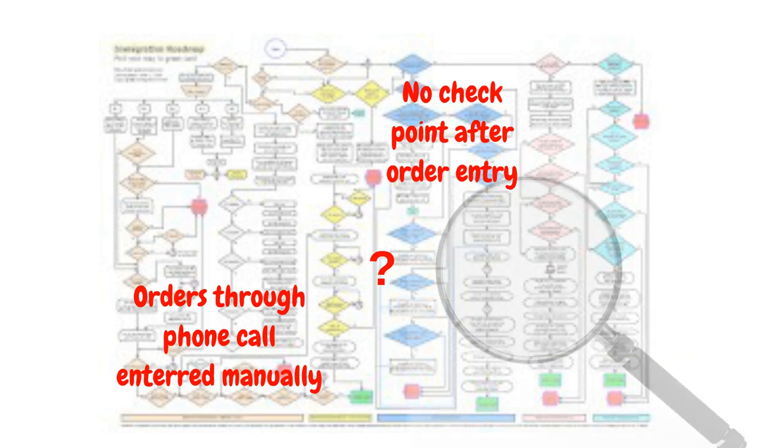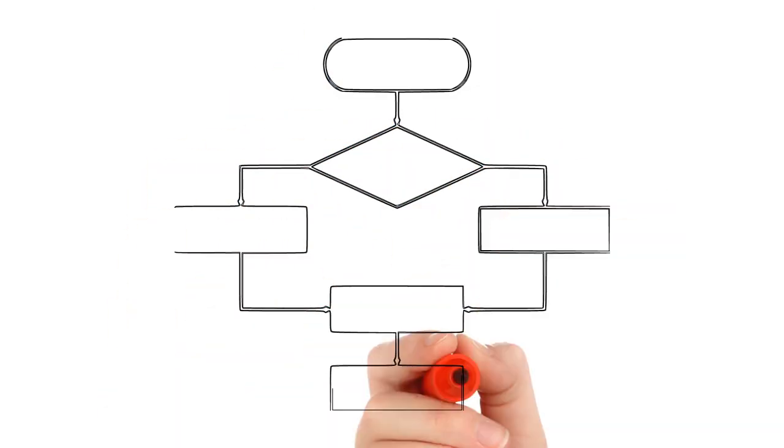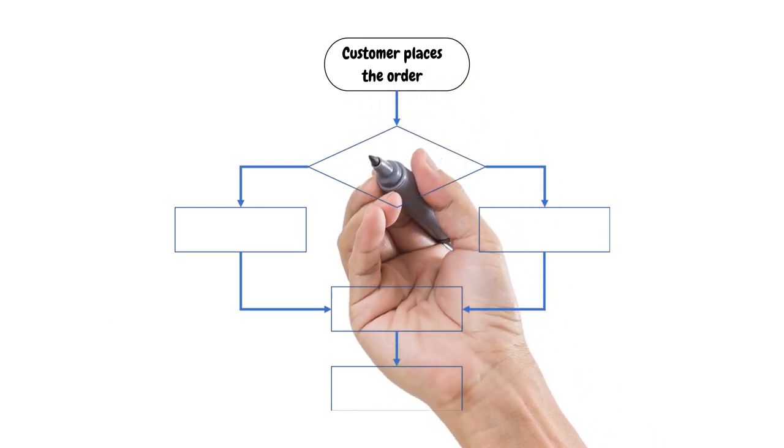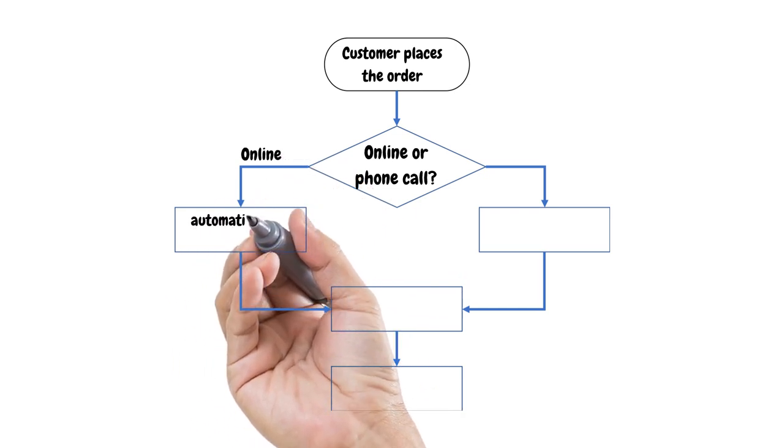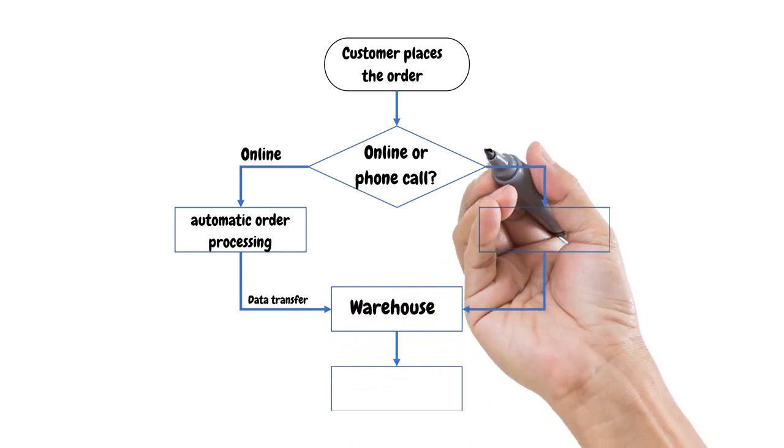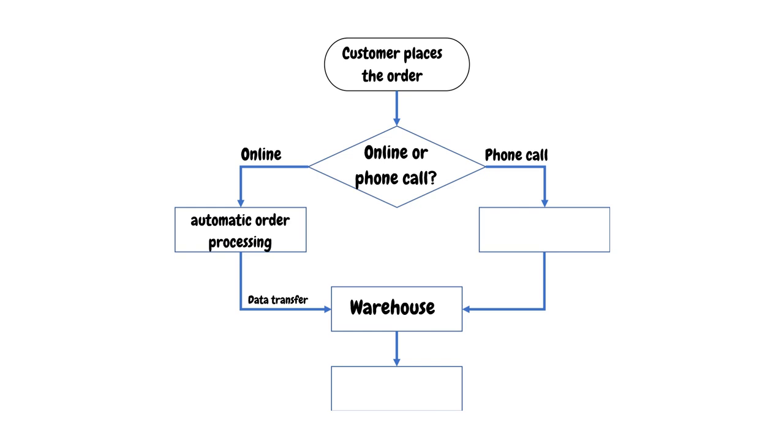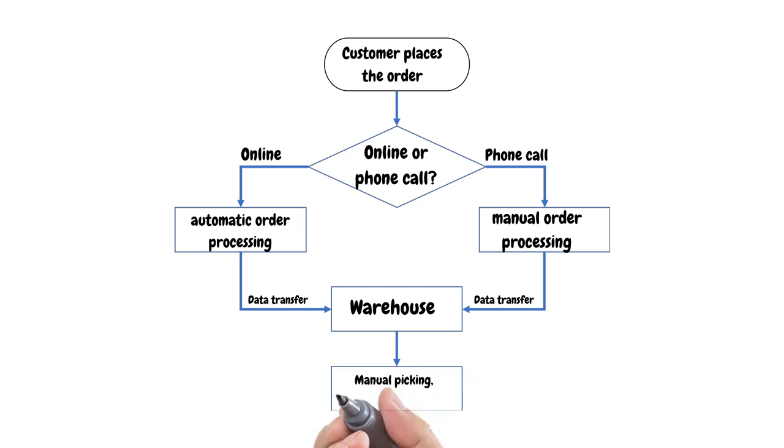Maybe there are more causes hidden within the process. In such a case, it is suggested to look into the whole workflow. For that, we will create a flow chart. The customer places the order. Did the customer send the order online or through a phone call? If it was online, then the order will be processed automatically and sent directly to the warehouse. If it was ordered through a phone call, then the order will be sent to the customer service for manual processing. After processing, the order will be sent to the warehouse. In the warehouse, the orders will be printed out and the items will be picked up manually, packaged and handed out for delivery.